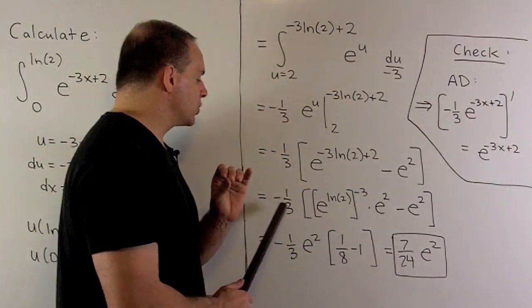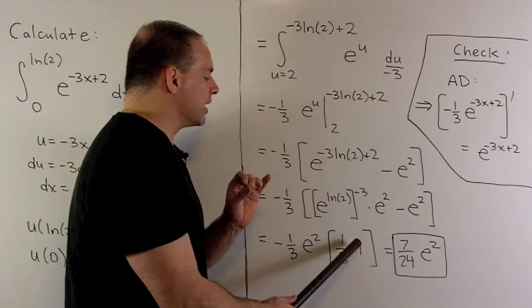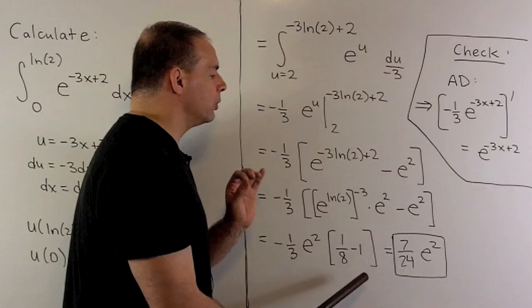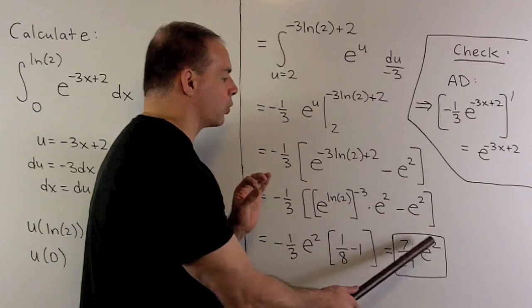So we have minus 1 third e squared and then 1 eighth minus 1, which is just minus 7 eighths. So when I multiply through, I get 7 24ths e squared.